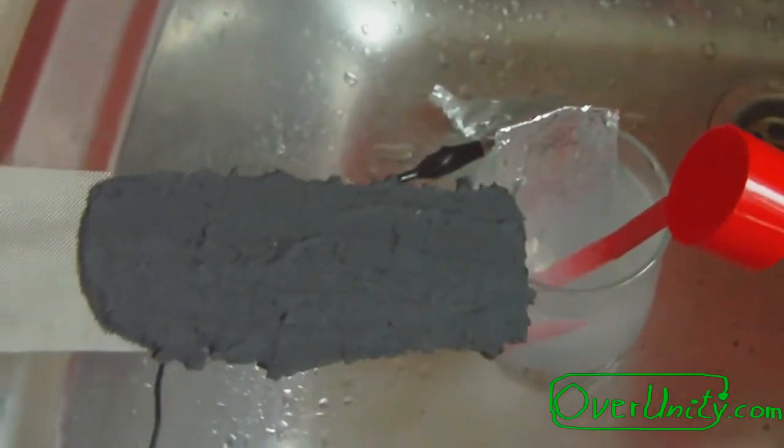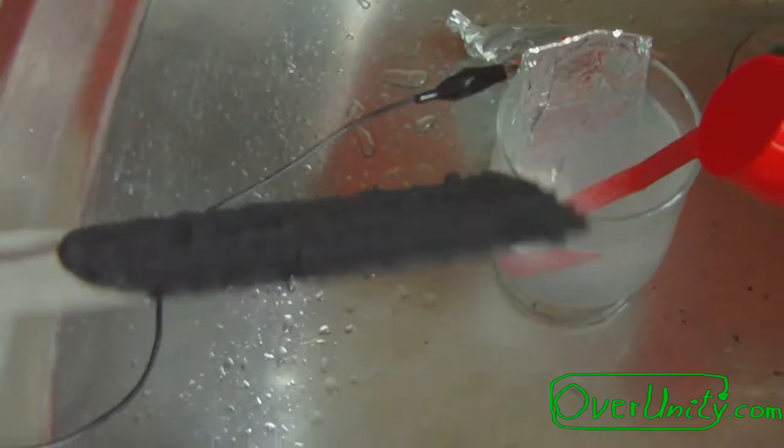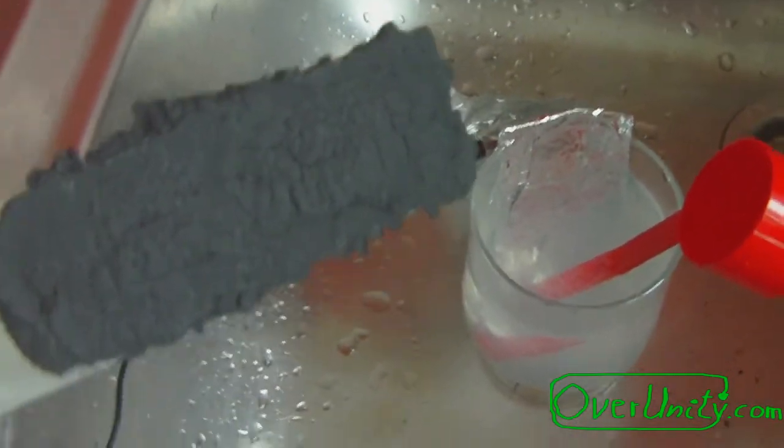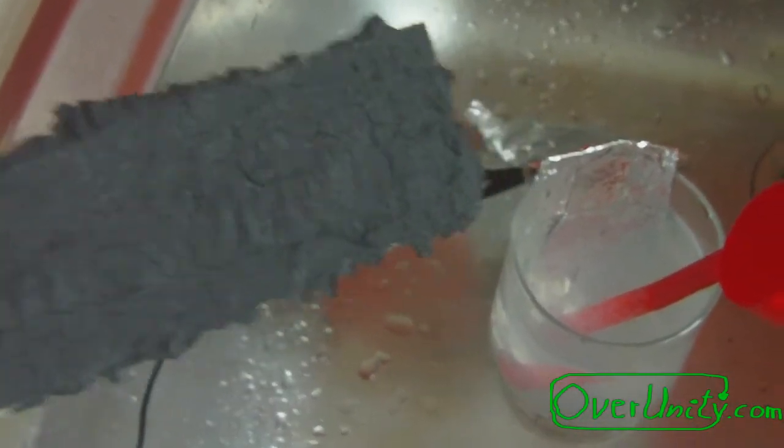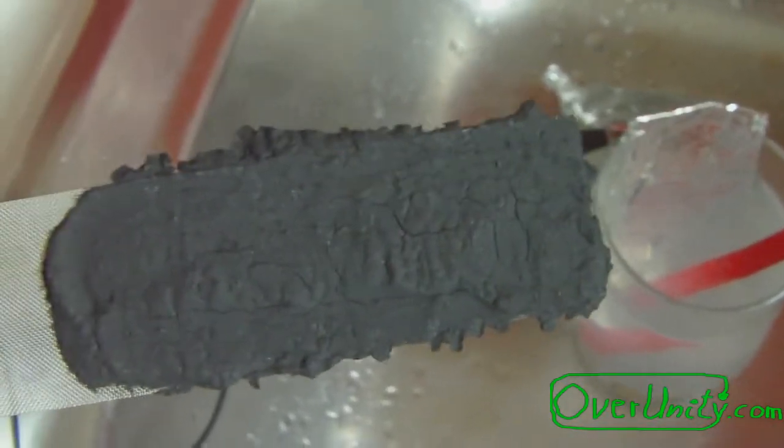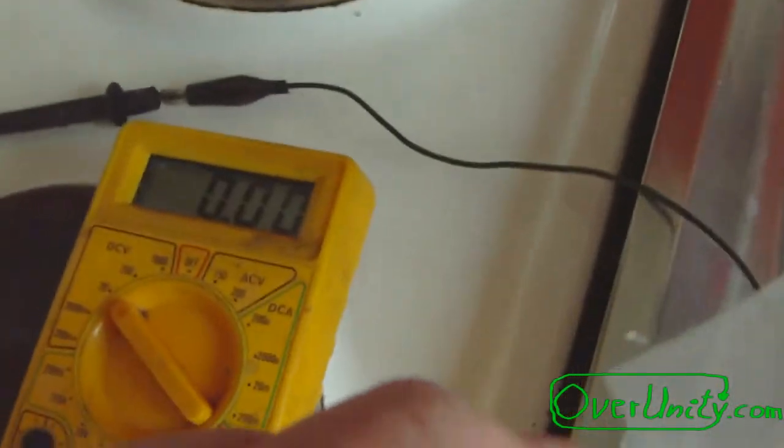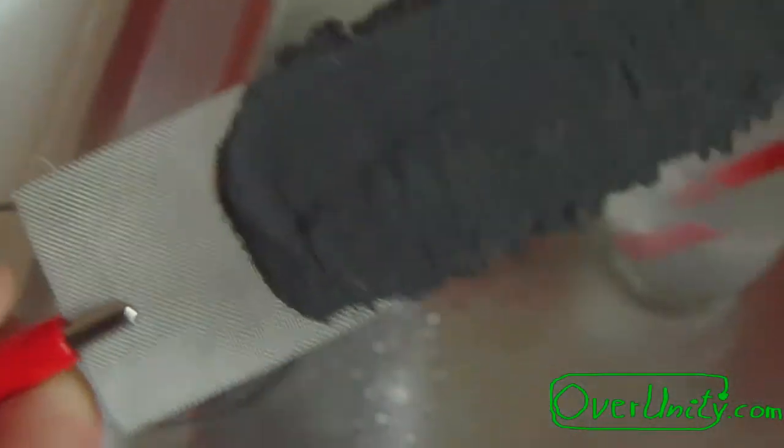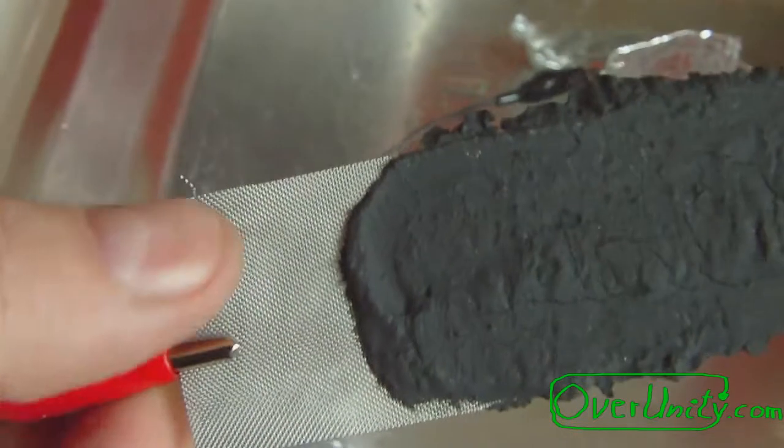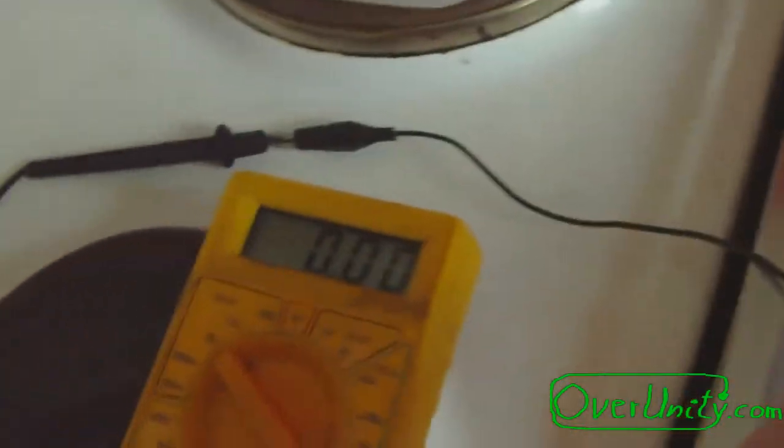This is Stefan from overunity.com. I am doing for the first time this experiment with my new electrode, which is graphite, charcoal, and potassium permanganate smeared onto a mesh of stainless steel. Now over here I have